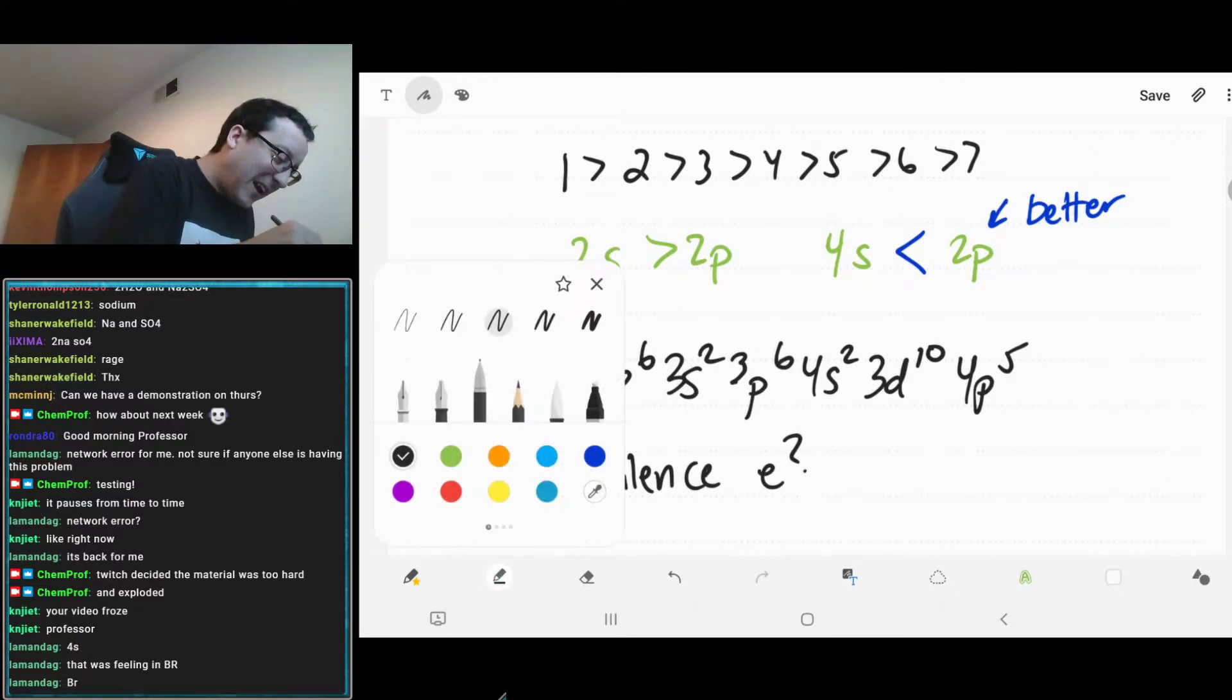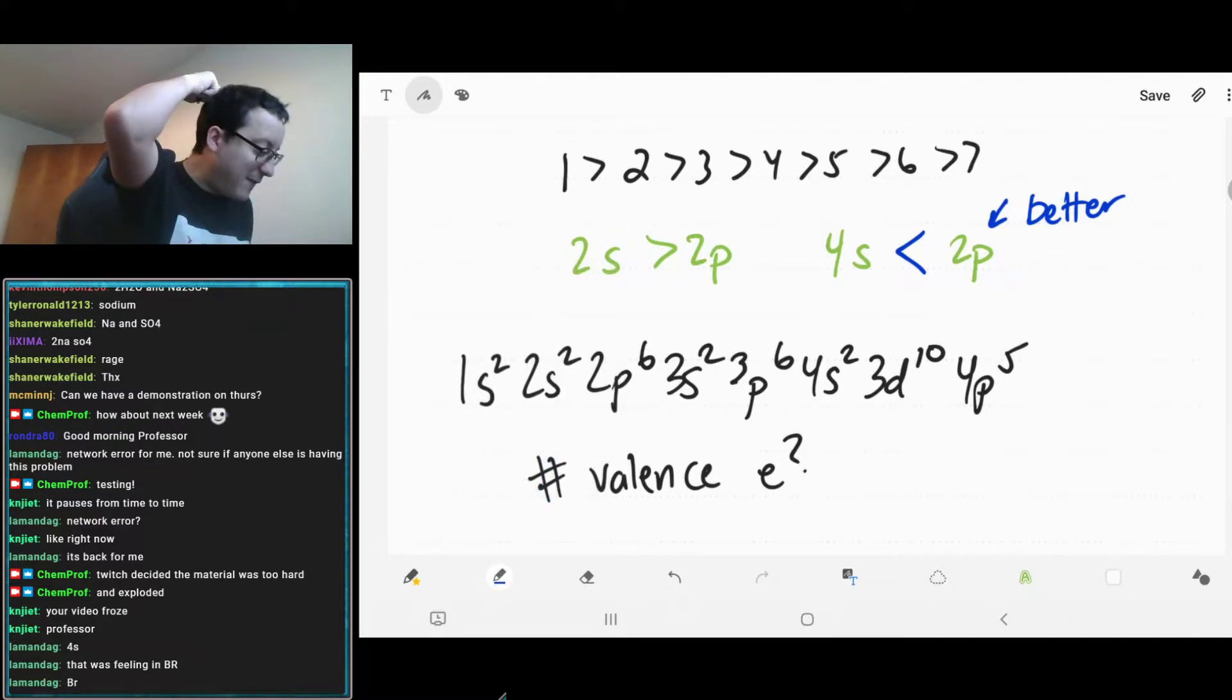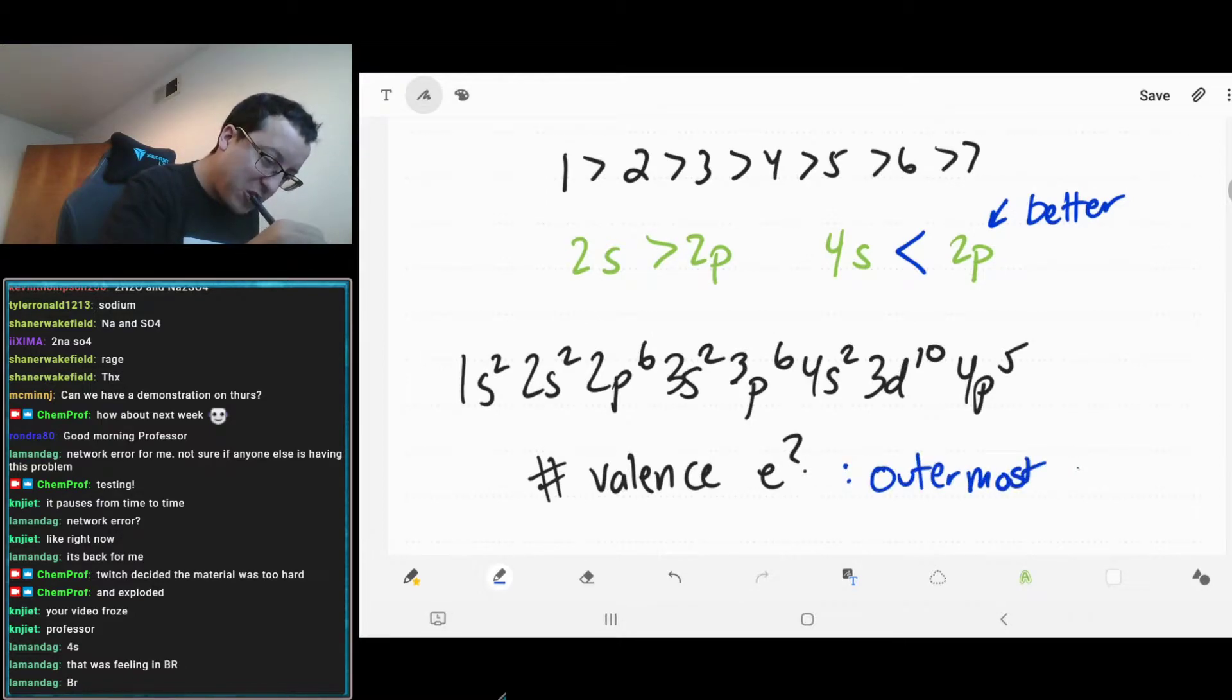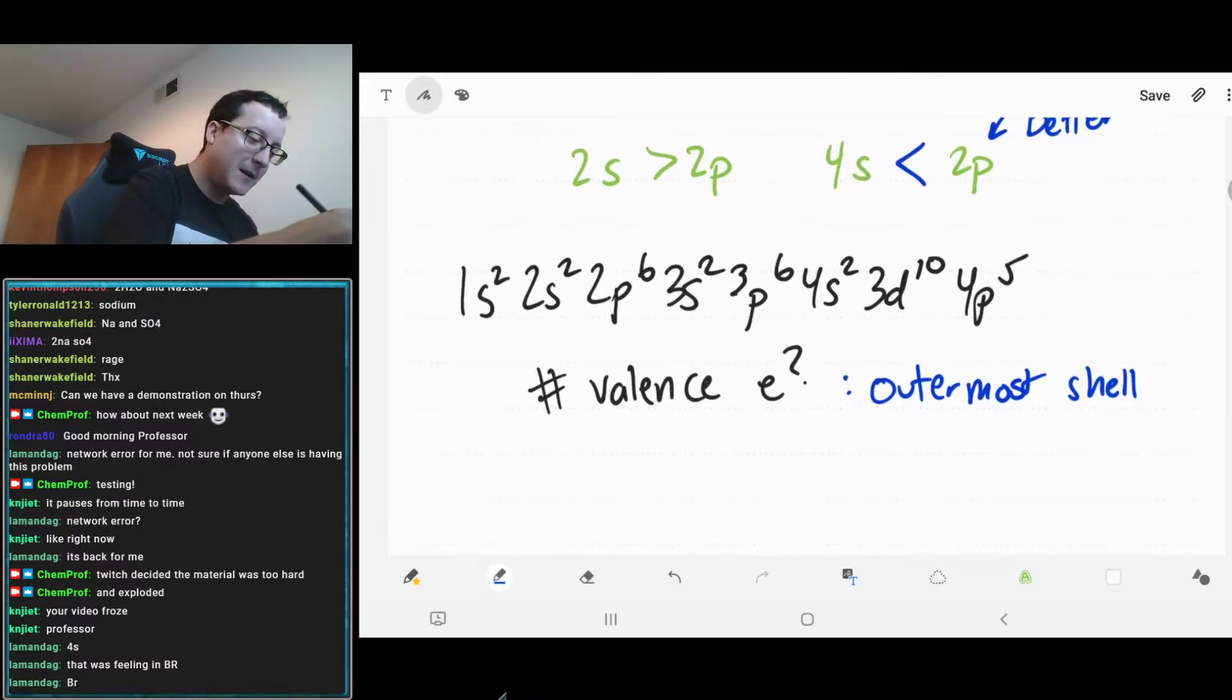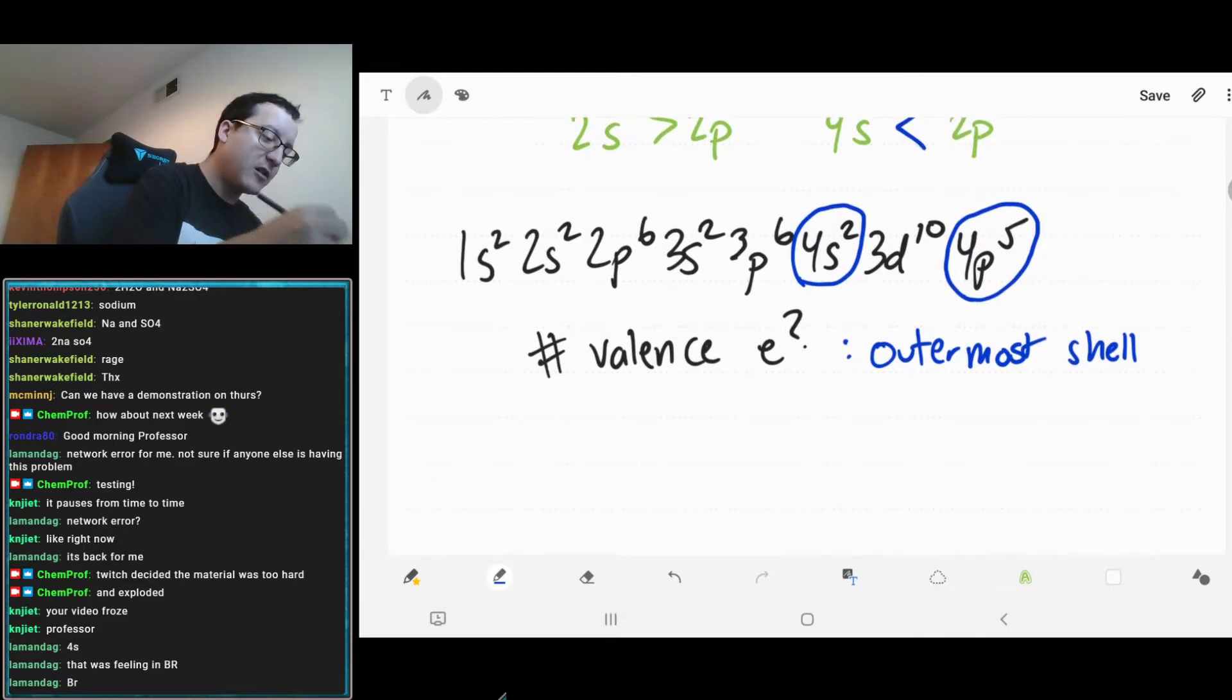Okay, so I'm just going to erase those arrows, just because they're going to make things messy for us. So looking at this, let's see if we can see how many valence electrons bromine has. I'm going to just copy its electron configuration down here, just so we have more space. If we're looking at the valence electrons now, remember that valence is the outermost shell.